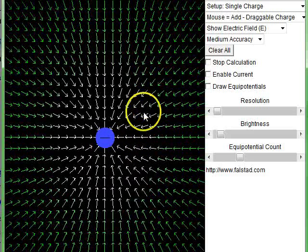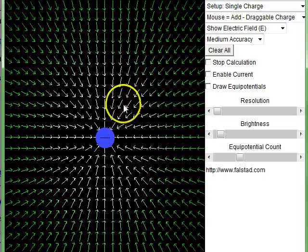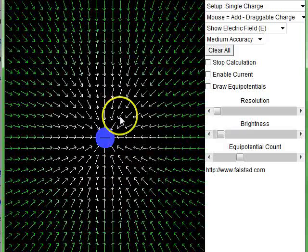So all these arrows, every point in space has an arrow associated with it, or a vector. And the magnitude decreases as you get further away. That's indicated by the color. And the direction here is always towards the negative charge in the middle.